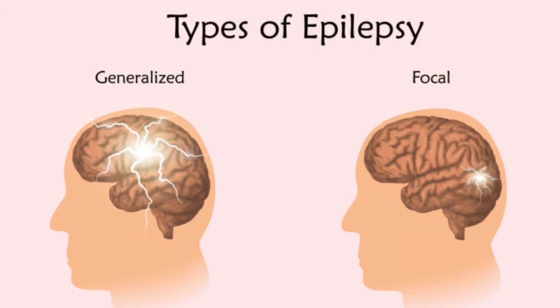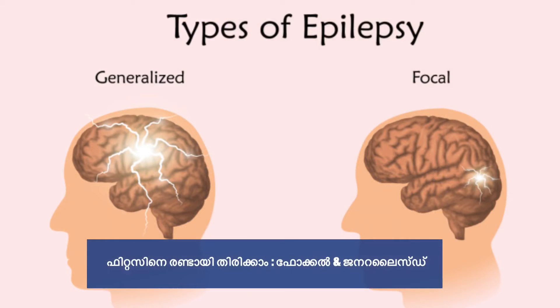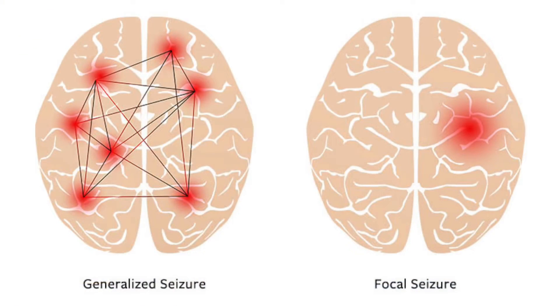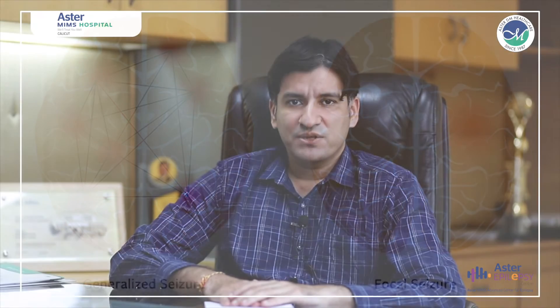Coming to the types of seizures — seizures are generally of two types: focal seizures and generalized seizures. Focal seizures, formerly called partial seizures, start in a small area of the brain and over time can spread to other areas on the same or opposite side. Generalized seizures start simultaneously in both sides of the brain and spread rapidly, resulting in a full blown seizure.